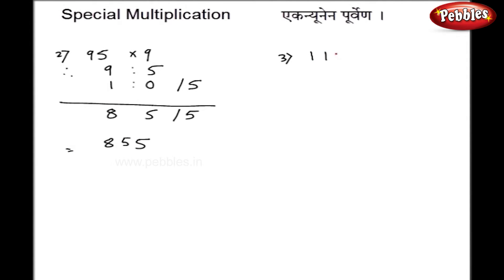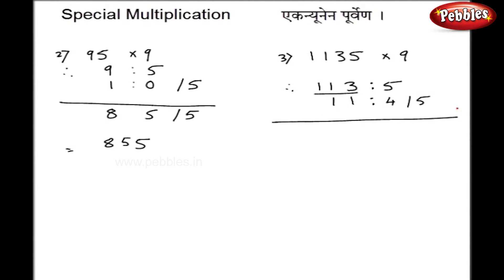Next example: 1135 multiplied by 9. In this case I write 113 on the left hand side and only 5 on the right hand side, because there is only one digit in the multiplier. As the next step, I add 1 to get 114 and 5. So 10 minus 5 is 5, then 1, 2, 0, 1 — and my final answer is 10215.